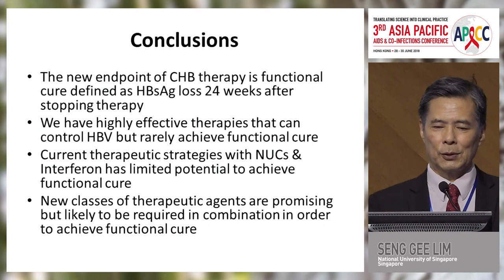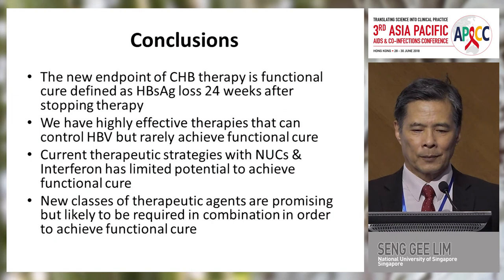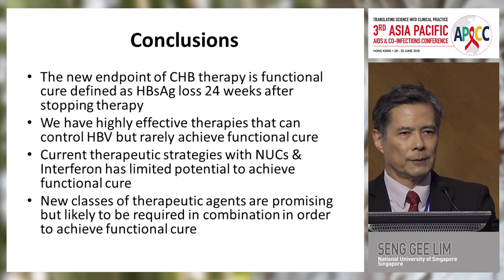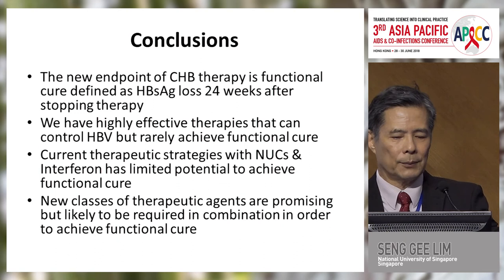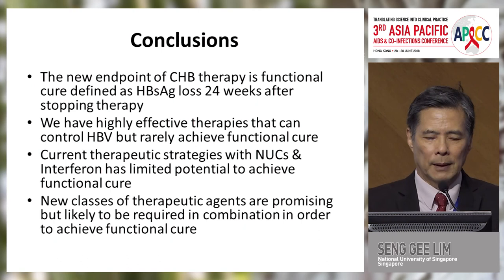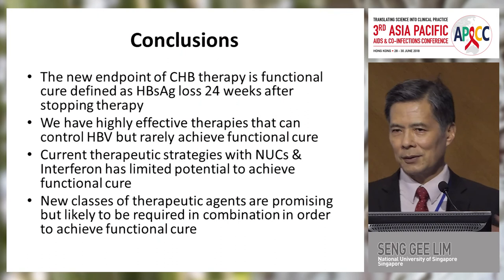To conclude: the new endpoint of chronic hepatitis B therapy is functional cure, defined as s-antigen loss 24 weeks after stopping therapy. We have highly effective therapies that can control HBV, but they rarely lead to cure. Current therapeutic strategies with nucleoside analogs and interferon have limited potential to achieve this outcome. New classes of therapeutic agents are promising, but are likely to be required in combination in order to achieve functional cure. Thank you very much for your attention.